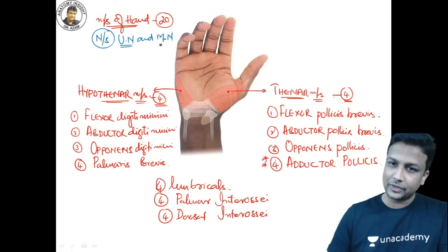Pointing index: if median nerve is injured, the thenar muscles and lumbricals 1 and 2 are lost. When the person tries to make a fist, the ulnar-supplied fingers flex but the index and middle fingers remain extended — creating a pointing index appearance. This is the median nerve. Similarly, the hand of benediction (like a priest blessing) is also a sign of median nerve injury.